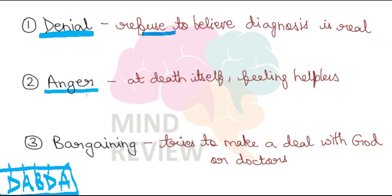Then gradually, when they understand that denial won't work and the diagnosis is real, they express Anger. There is a lot of anger — firstly, towards the death or diagnosis itself: 'Why only me? Why is this happening to me?' And secondly, because they feel very helpless — they cannot do much about it now. So there is a great deal of anger that the person experiences.